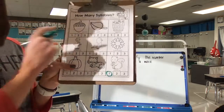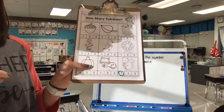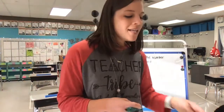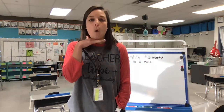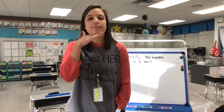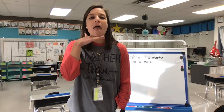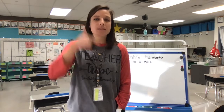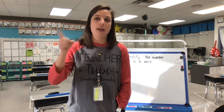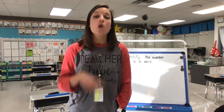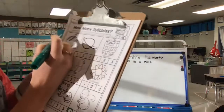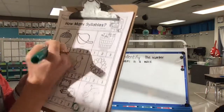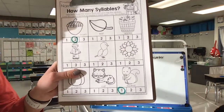All right, let's come up to the picture of the acorn. Let's use our chins to figure out how many syllables are in the word acorn. Ready? Acorn. Let's try it again. Acorn. How many times did our chin push our hand down? Acorn. Two times. So we're going to circle the number two to show that acorn is made up of two syllables.